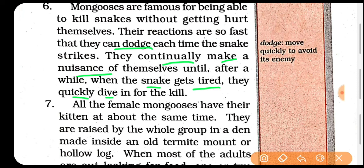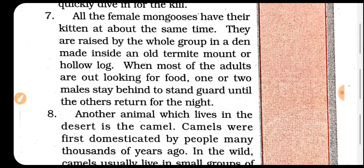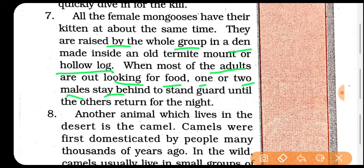All the female mongooses have their kittens at about the same time — inka jo birth time hota hai babies ka, woh mostly ek hi time hota hai. Aur sab ek saath hi apne bachon ko janam dete hain. Woh ek den banaate hain — ek hollow log lekar — us ke andar group mein sab ka palan poshan karte hain. Aur jab most adults food ke liye jaate hain, to unme se ek ya do male stay behind — to stand guard — un ki dekhwali karne ke liye, jab tak ki raat tak doosre mongoose laut aa jaate hain.